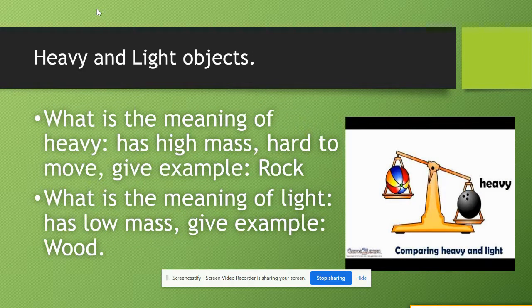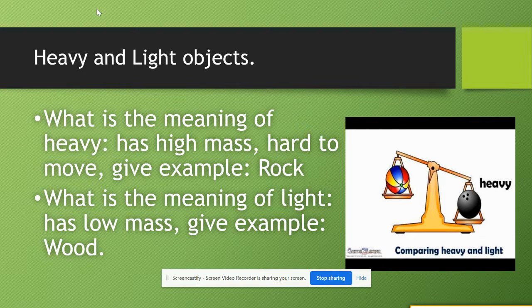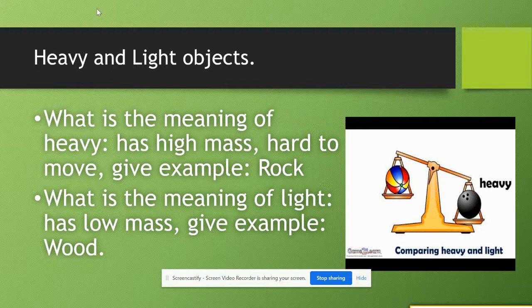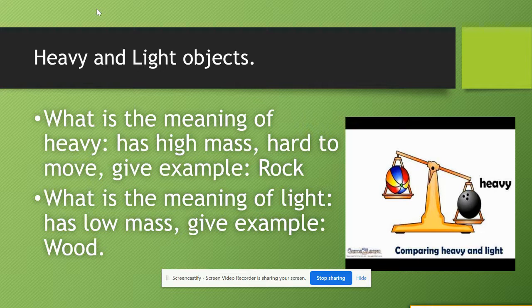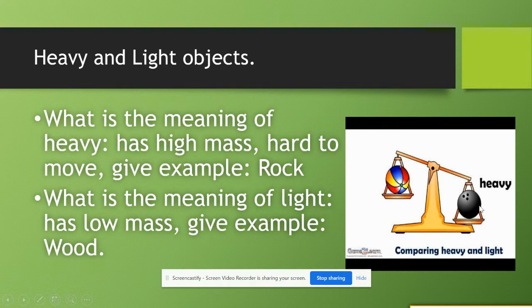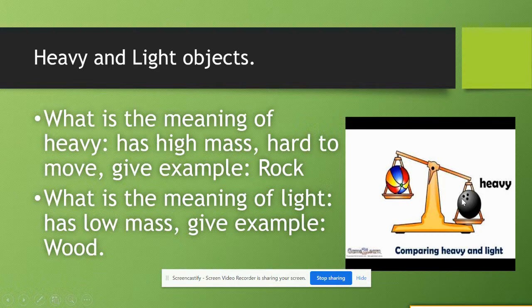First of all we will start with the meanings of heavy and light objects. What is the meaning of heavy? When I have a heavy object, it has high mass so the balance will go more down and it is hard to move it, like a big rock for example.